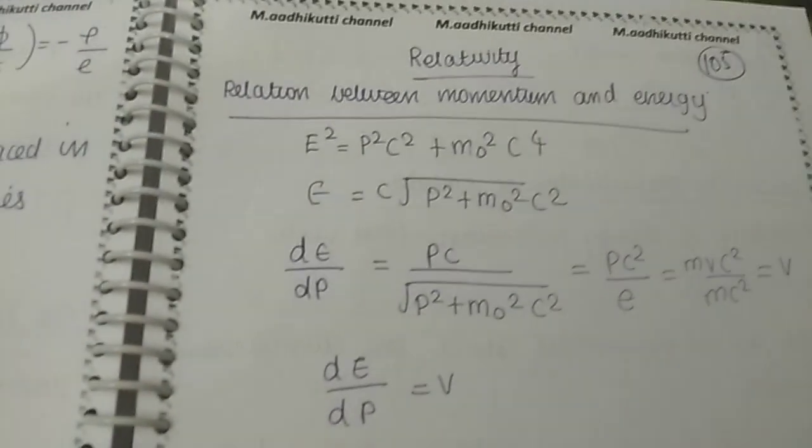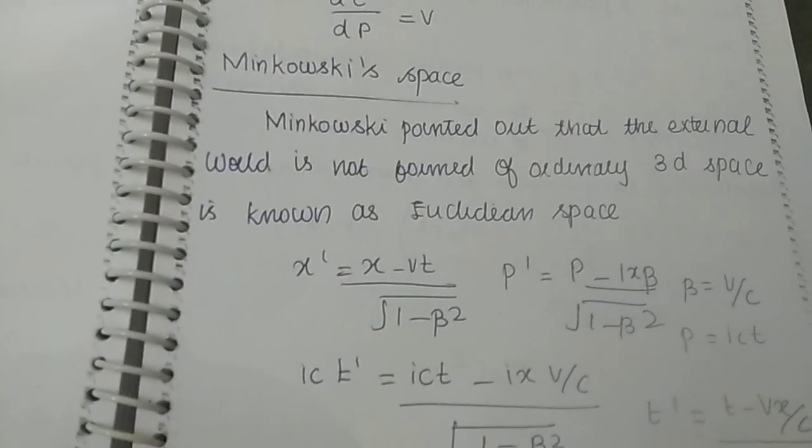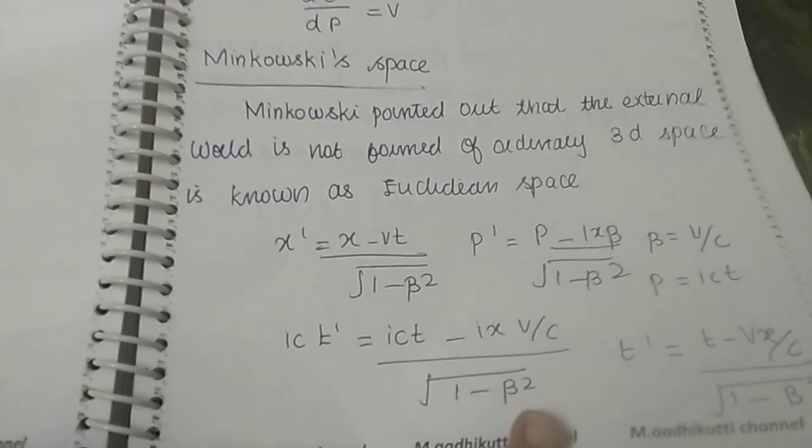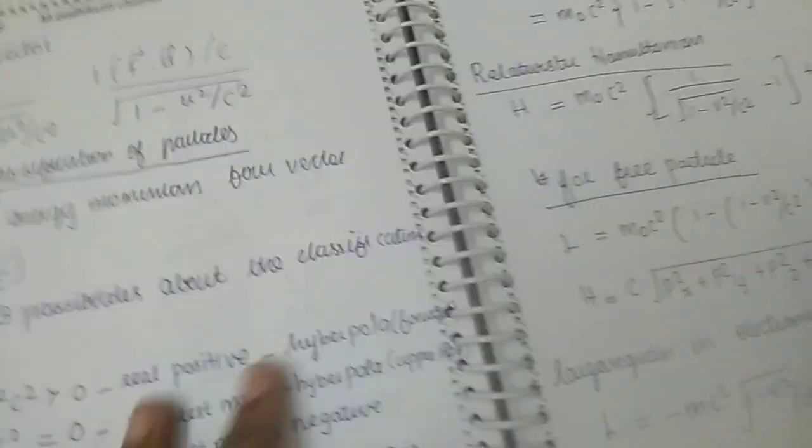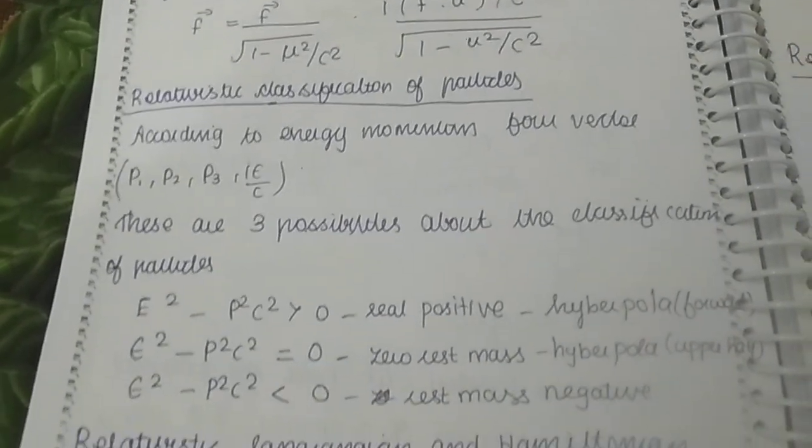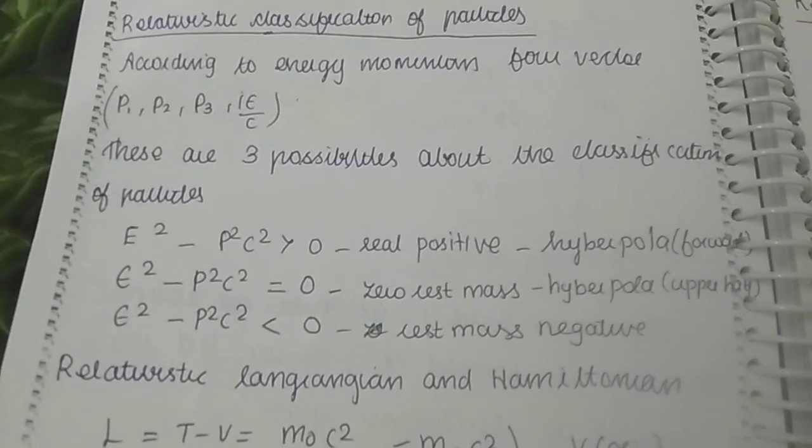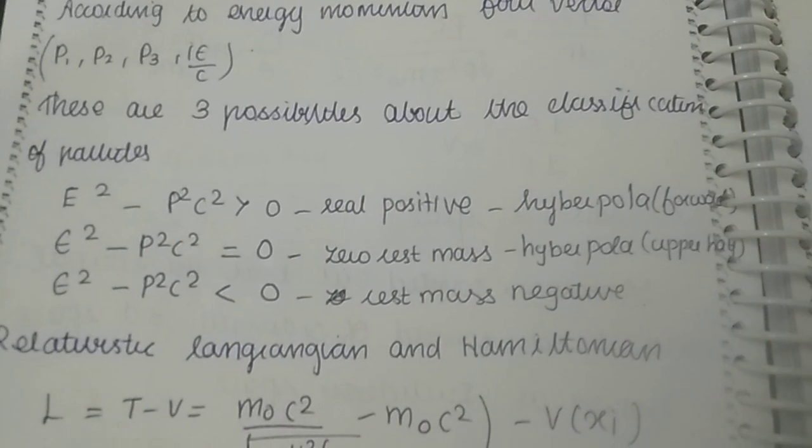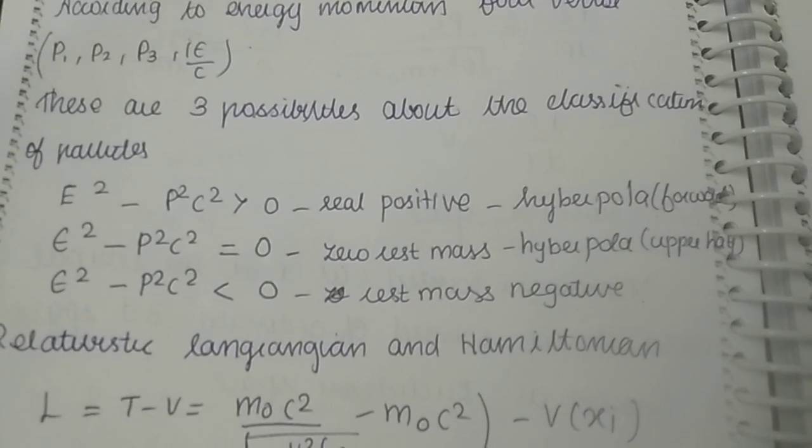Relativity: relation between momentum and energy, Minkowski space, XP space, surface, four vectors, relativistic classification of particles, moon possibilities - real positive hyperbola, forward upper half, rest mass negative.